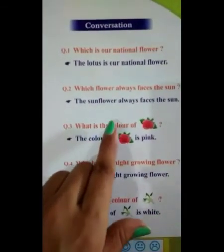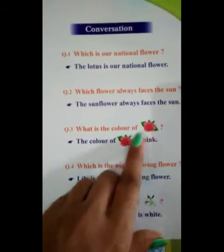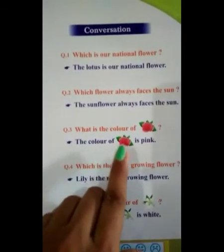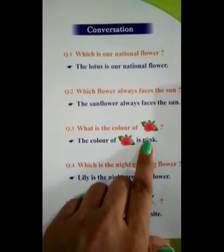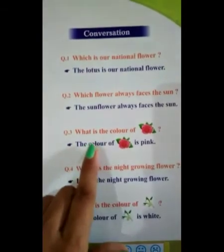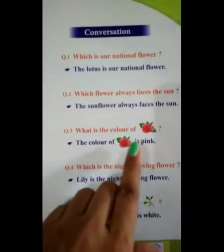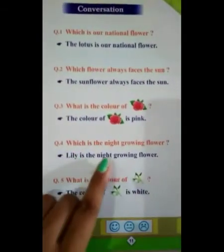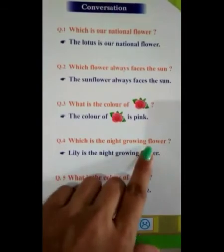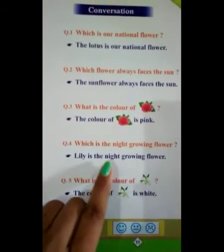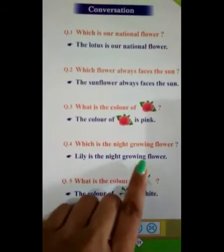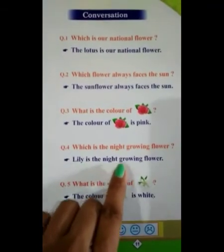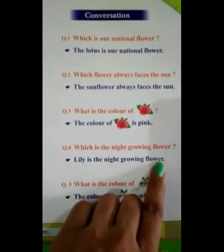Which is the color of rose? The color of rose is pink. Which is the night growing flower? Lily is the night growing flower. Lily is the night growing flower.